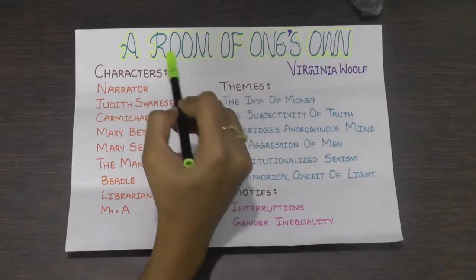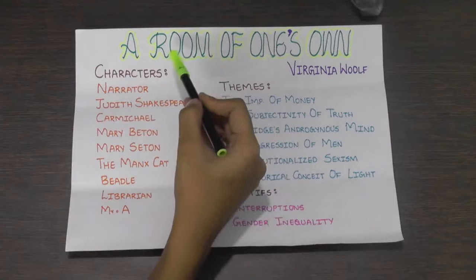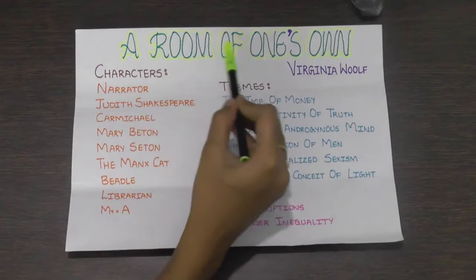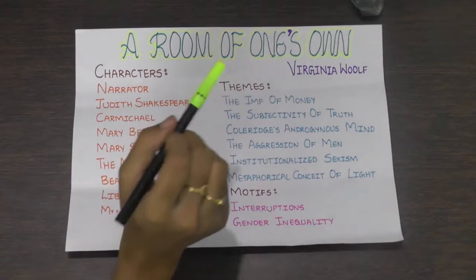A Room of One's Own by Virginia Woolf is a part of 20th century British literature and is a prose work. Virginia Woolf's A Room of One's Own is a path-breaking essay of 20th century thought.